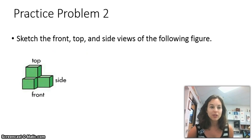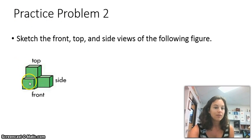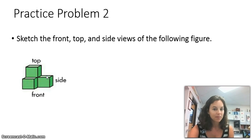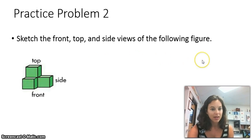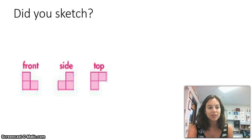Here we have practice problem number two: sketch the front, top, and side views of the following figure. Go ahead and sketch what you think that would look like — make a column for front, top, and side. Pause this video, and when you think you have the right answer, let's check. Here's the front, here's the side, here's the top. If so, give yourself a pat on the back. If not, make your corrections and we'll move on.